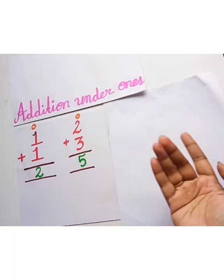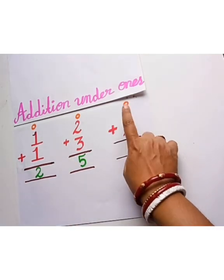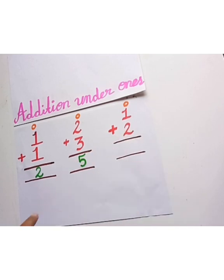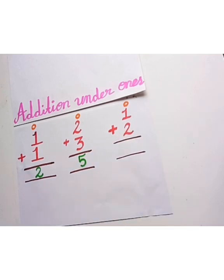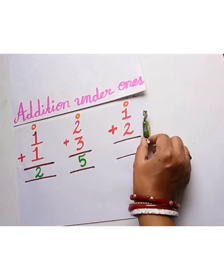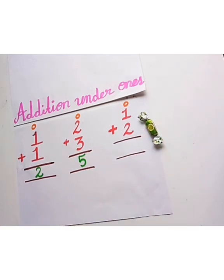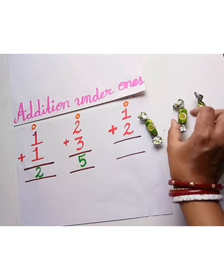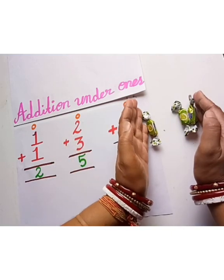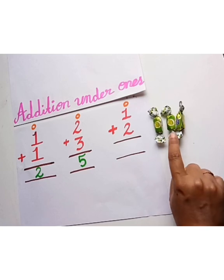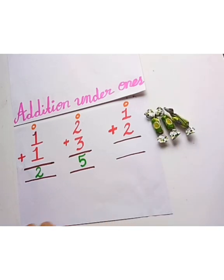Let's do another sum: 1 plus 2. This is one toffee, and these are 2 toffees: 1, 2, 3. Let's add together. Now let's count: 1, 2 and 3. So we will write here 3.